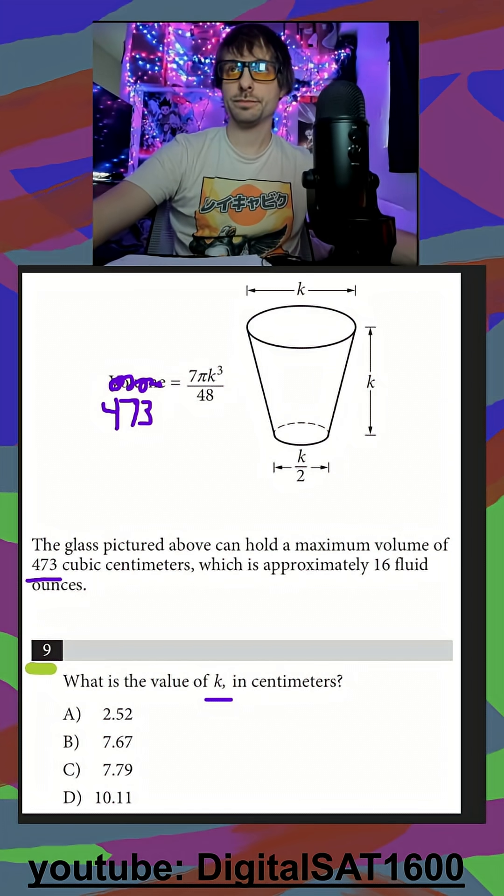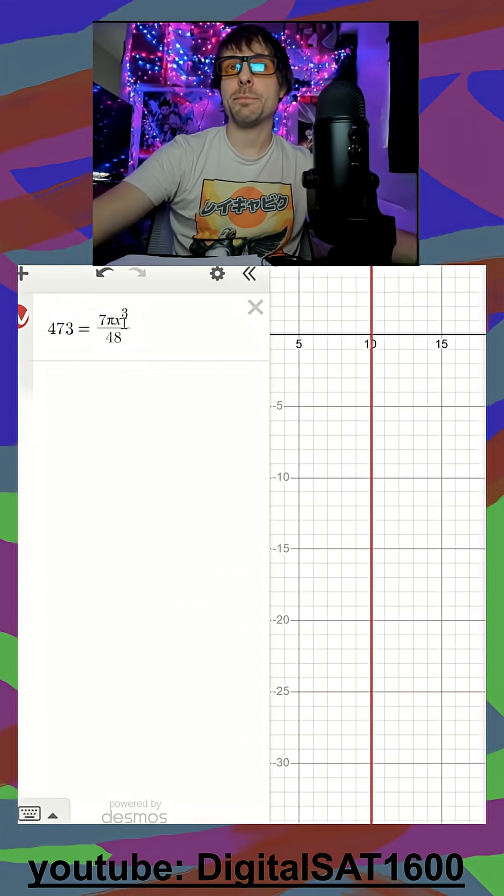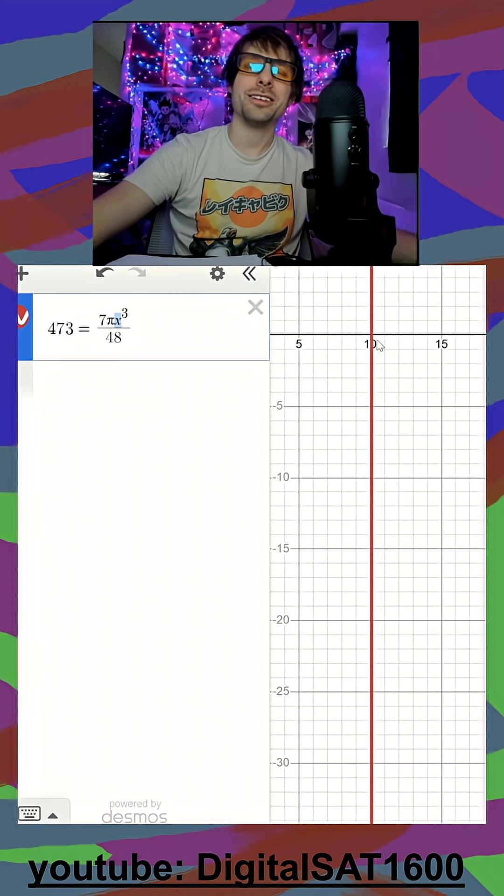So I pull up Desmos, and I type in the exact equation, except I replace k with x. And it automatically tells me that if I look at my answer choices, it's probably the one close to 10.